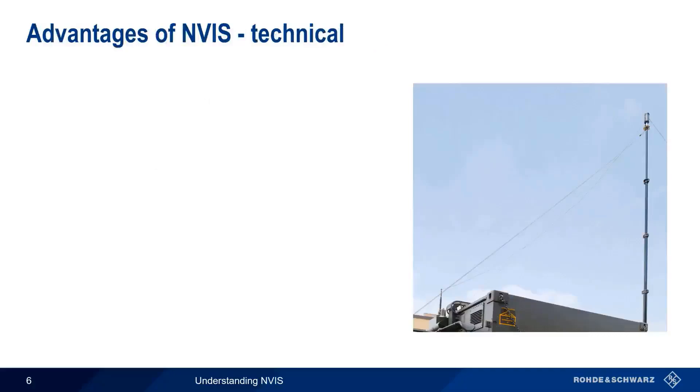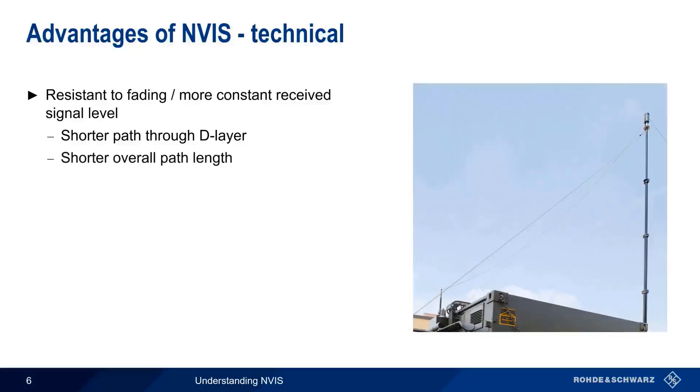NVIS has a number of purely technical advantages. The first of these is that NVIS is more resistant to fading and provides a more constant signal level compared to traditional SkyWave propagation. Furthermore, the near-vertical incidence angle of NVIS means a shorter path through the D-layer and less D-layer absorption. In addition, a shorter overall path length reduces attenuation between transmitter and receiver.